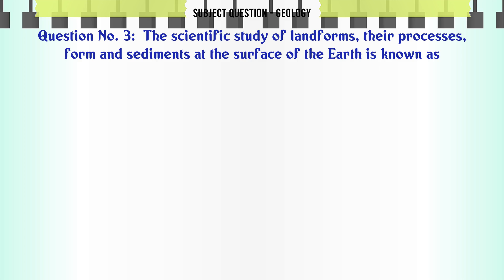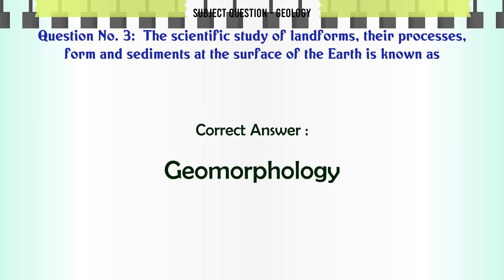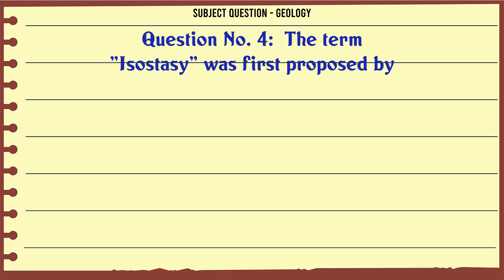The scientific study of landforms, their processes, form and sediments at the surface of the earth is known as: A. Geomorphology. B. Geomethology. C. Geophysics. D. Glaciology. The correct answer is Geomorphology.